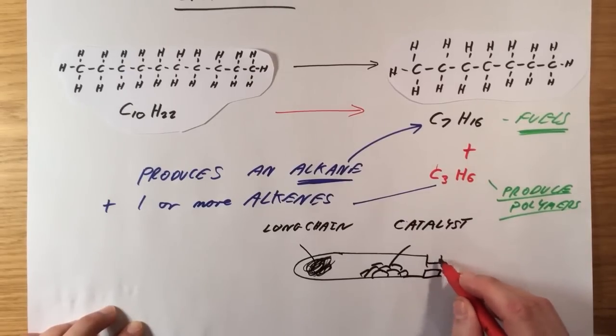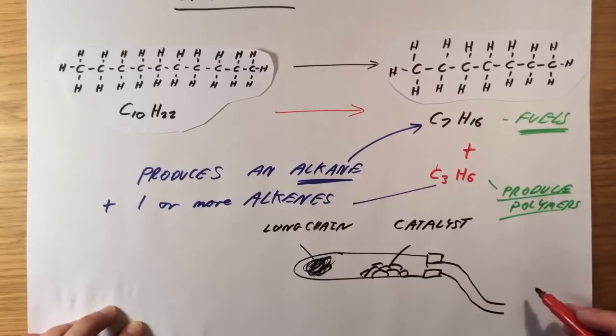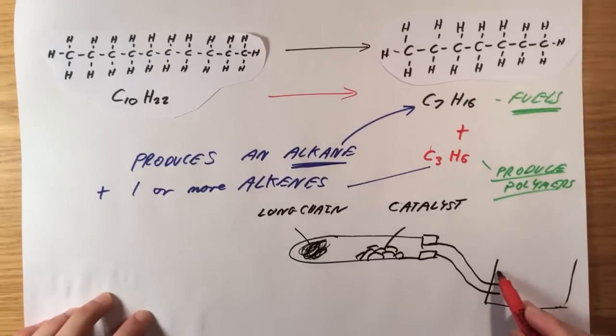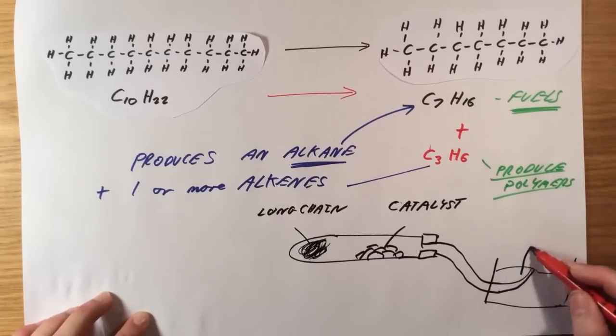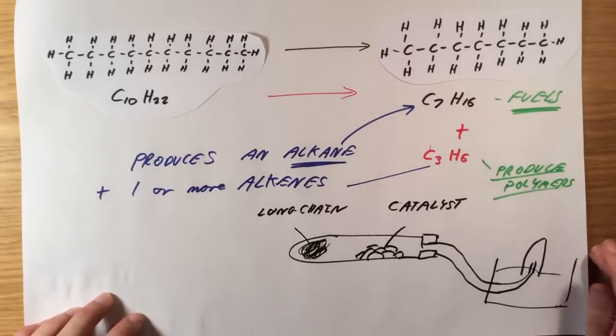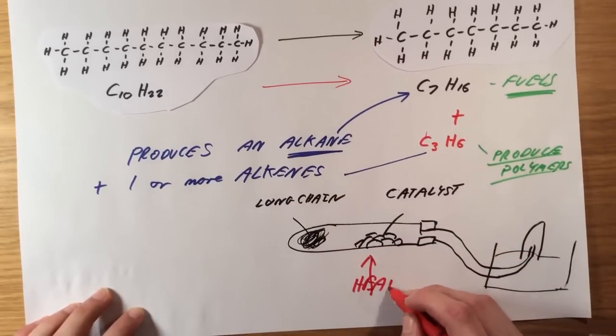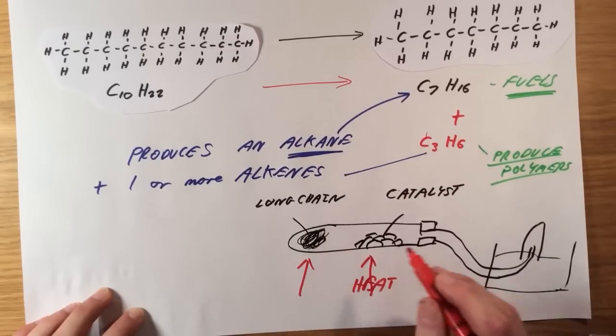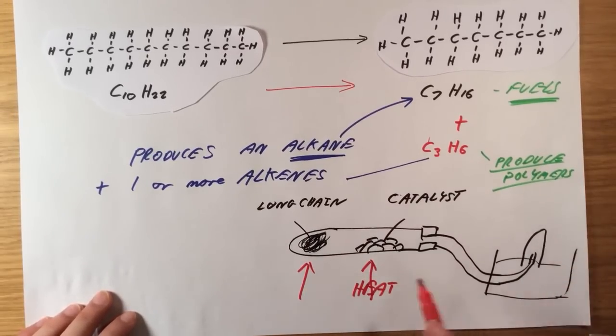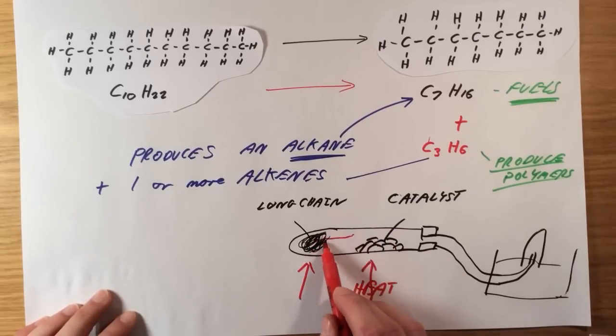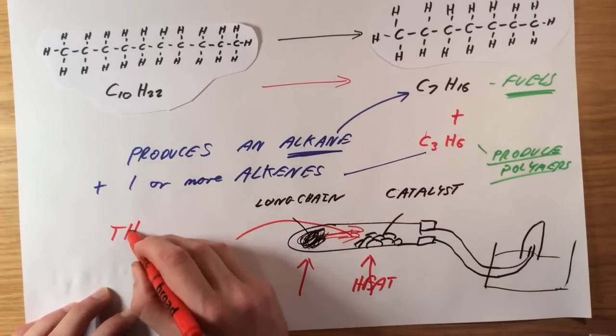What you're then going to have is a tube to collect the products that are given off. And what we normally have is them going into a water trough. So you could then easily collect the compounds that are produced here. As I said, it's a thermal decomposition reaction. So we're going to have to heat up both the catalyst to get it nice and hot and the hydrocarbon to make sure it evaporates. And as the hydrocarbon evaporates and passes over the catalyst, it will thermally decompose.